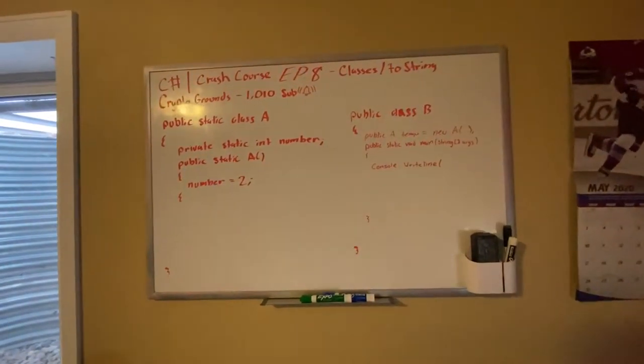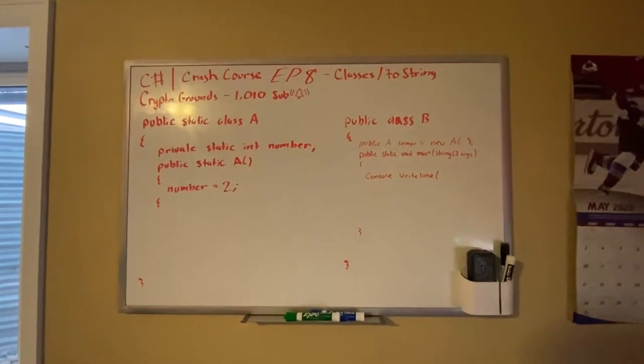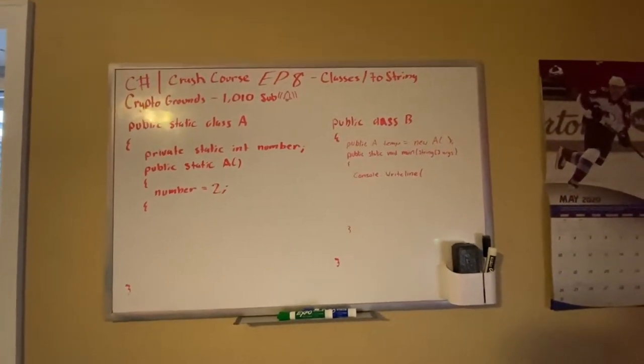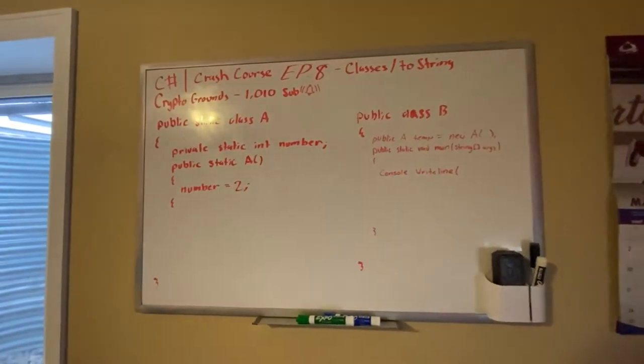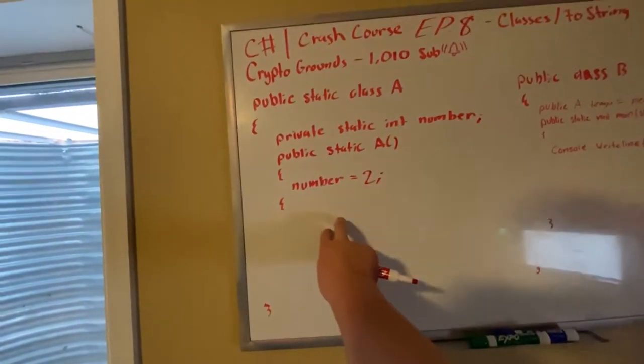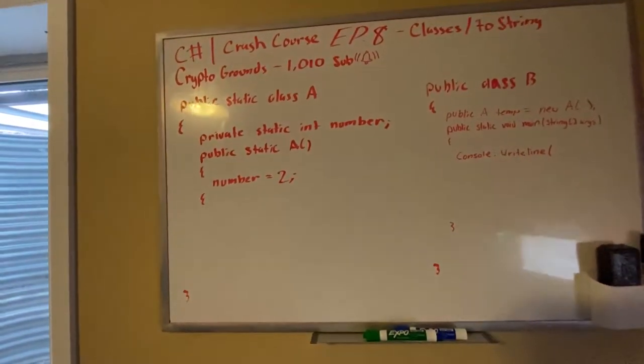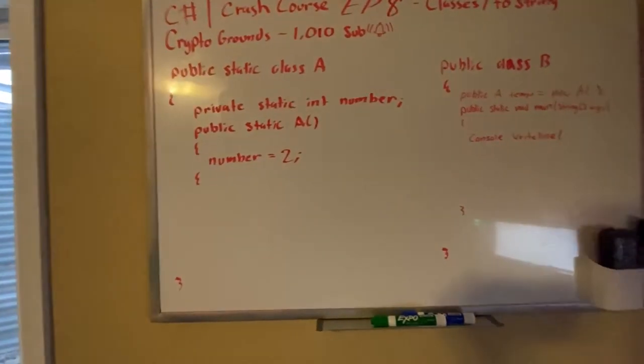Hello guys, Crypto Grounds here. Welcome back to another C-sharp crash course video. This is episode eight and today we're going to be doing ToString methods inside the class. So before we get started, right now I'm still in my static class. This is an issue because ToString cannot be overridden in a static class.